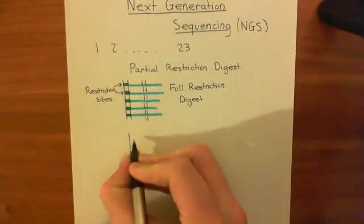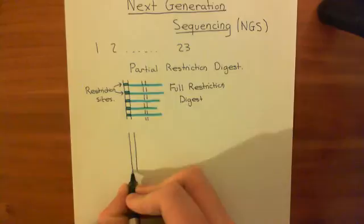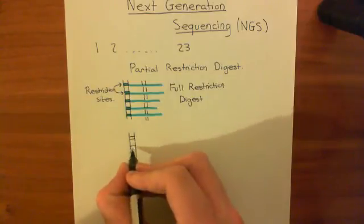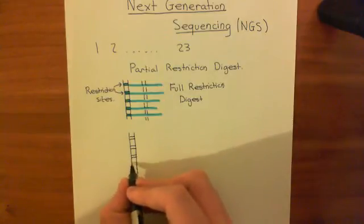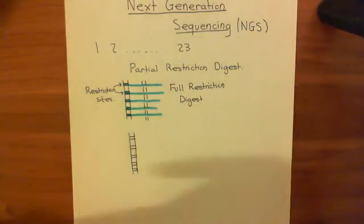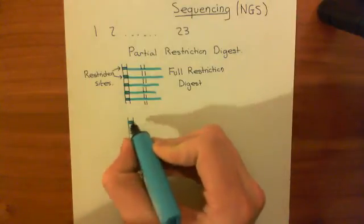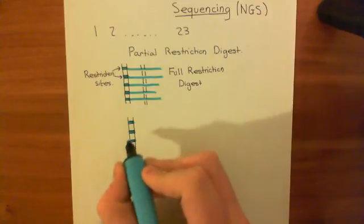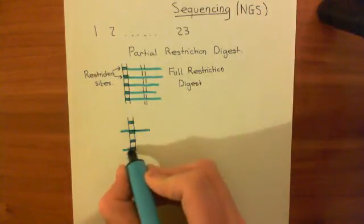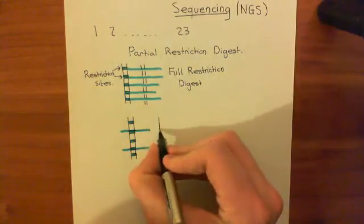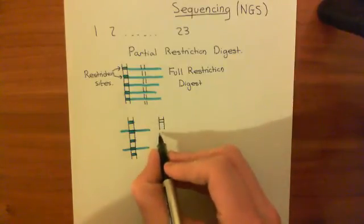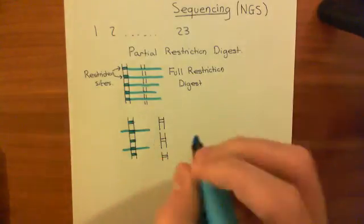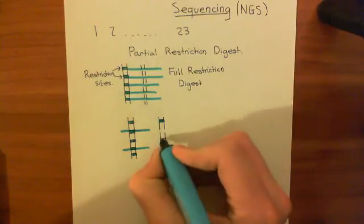In a partial restriction digest, you take multiple copies of chromosome 1 and put a lower concentration of restriction endonuclease on. This means the enzyme no longer cuts at every site. So instead of cutting at every restriction site, maybe it only cuts at two of them, giving you three different fragments instead of the maximum possible number.